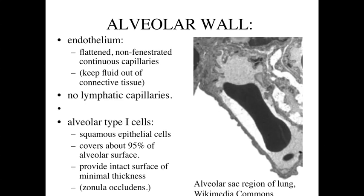Looking at the alveolar wall in an electron micrograph, the dark structure in the center is a red blood cell, so we're looking at the inside of a capillary. The white area to the bottom left is the airspace. Within the capillary we have an endothelial lining — a flattened, very thin, non-fenestrated epithelial lining forming a continuous capillary. This keeps fluids within the capillary network and the circulatory system, with no lymphatic capillaries present.